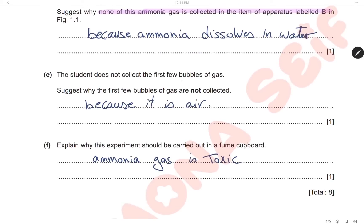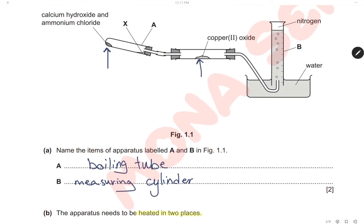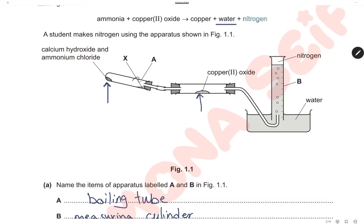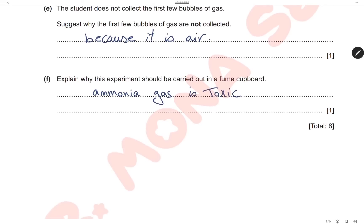The student doesn't collect the first few bubbles of gas. The reason is that air present in the boiling tube and the delivery tubes is collected first, so the first few bubbles are air, not nitrogen. That's why the student will not collect them. Also, explain why this experiment should be carried out in a fume cupboard: ammonia gas is toxic, and any experiment that produces toxic gas must be done in a fume cupboard.